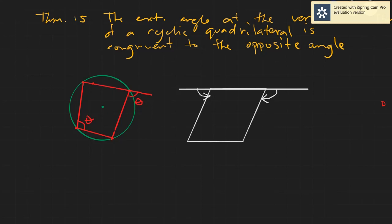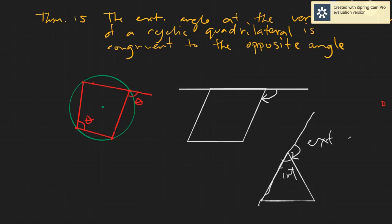An external angle on any given figure is not necessarily congruent to the opposite angle. This would only work if you have a circle — a cyclic quadrilateral. But basically, that is how you create an external angle. Say we have a triangle here, we extend this side, you will have an angle here outside. This angle is called an external angle, and the angle inside is called the internal angle.